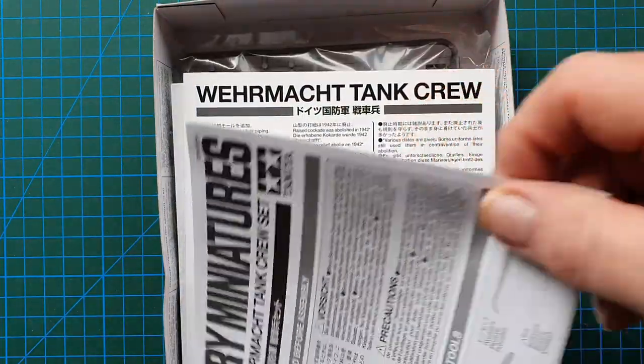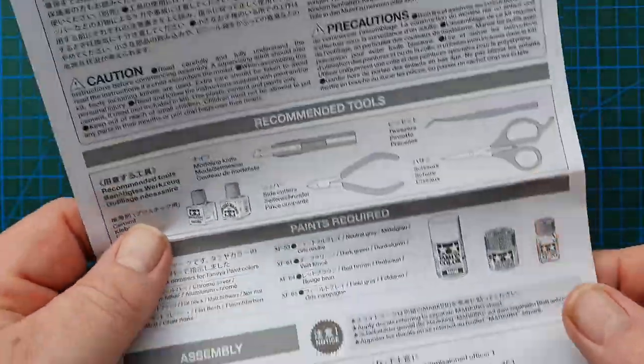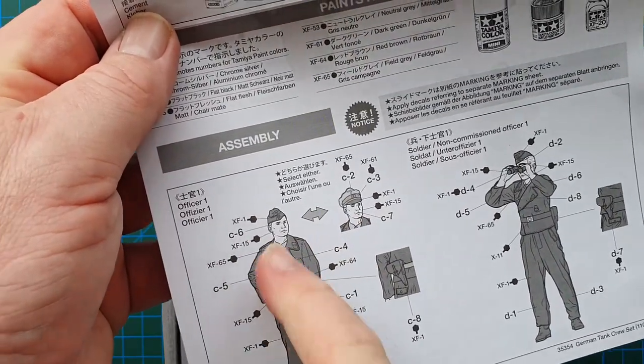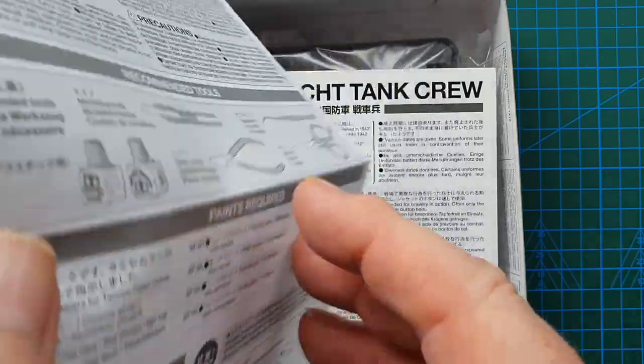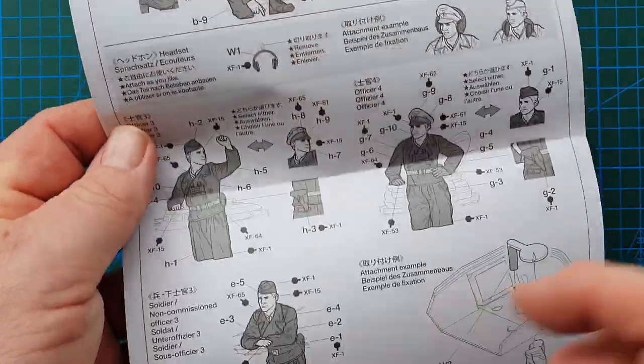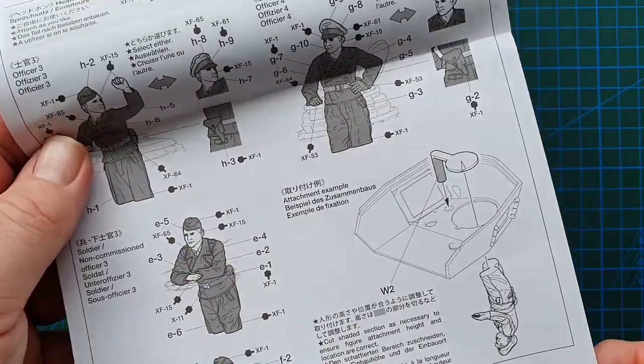Let's have a look at the instructions. Separate instructions for each figure: alternate side cap or full crusher cap, binoculars, kneeling figures. These are your different figures and it has paint callouts all the way through, which is really nice.